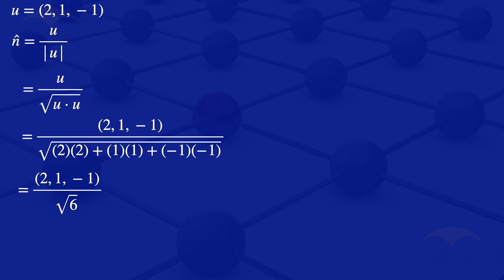I can divide all those components by √6 so we can rewrite that normalized vector as (2/√6, 1/√6, -1/√6). So that's the normalized vector—it's a unit vector in the direction of our given vector u.